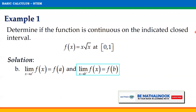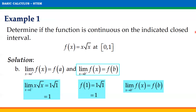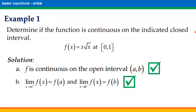We also need to check if the limit of f(x) as x approaches b from the left equals f(b). Evaluating the limit as x approaches 1 from the left, we get 1 times the square root of 1, which equals 1. Evaluating f(1), we get 1 times the square root of 1, which also equals 1. So the limit as x approaches b from the left equals f(b). Since both conditions are satisfied, f is continuous on the closed interval [0, 1].